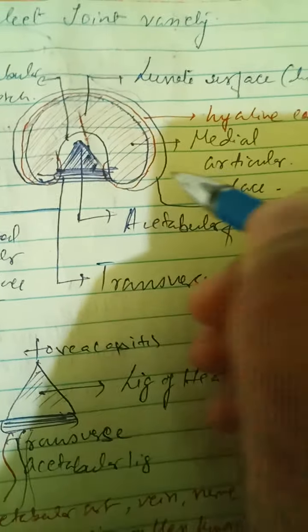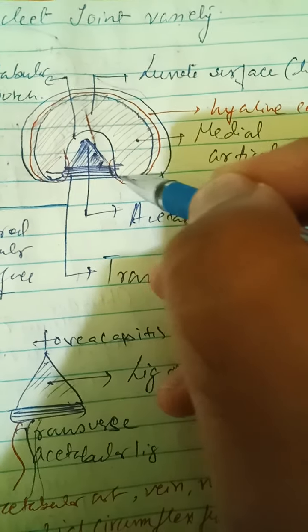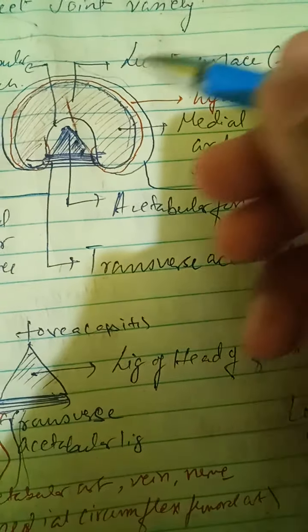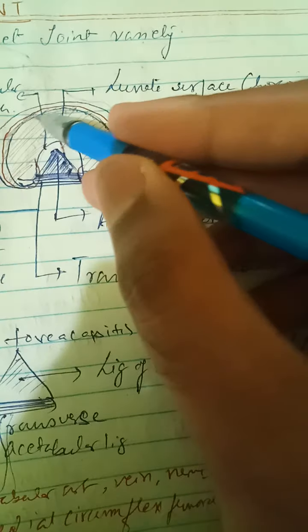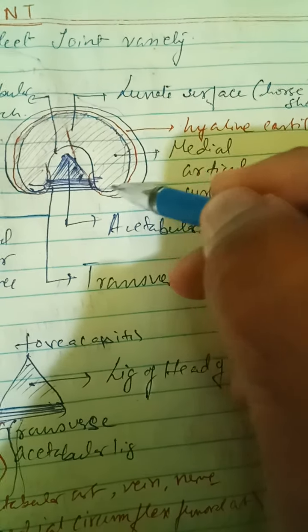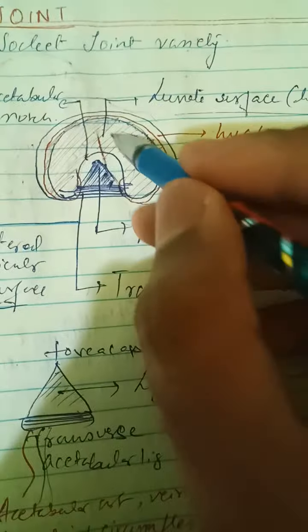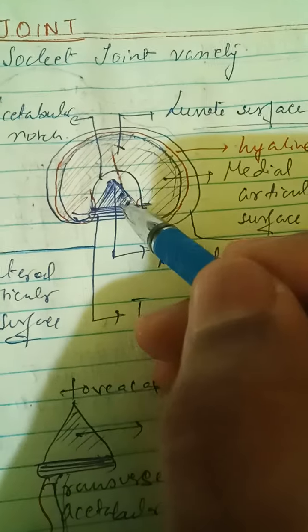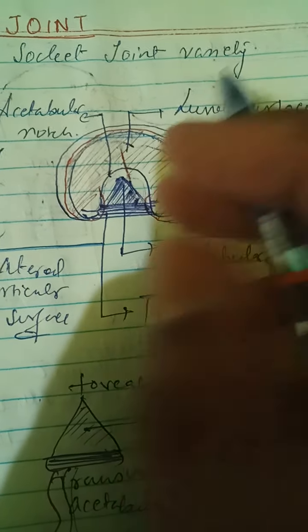The medial articular surface consists of the acetabulum. The acetabular surface is a horseshoe-shaped surface known as the lunate surface. Along the acetabular surface there is the acetabular notch, and there is also the acetabular fossa, which is connected to the fovea capitis of the head of the femur.